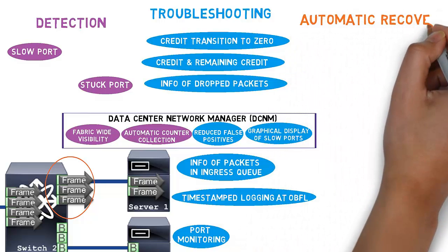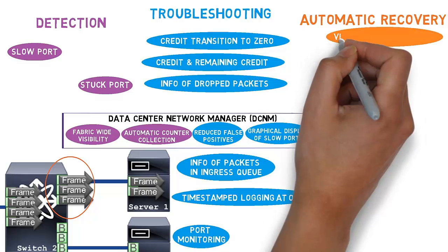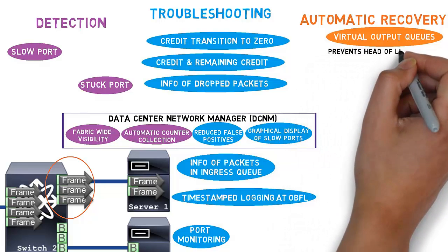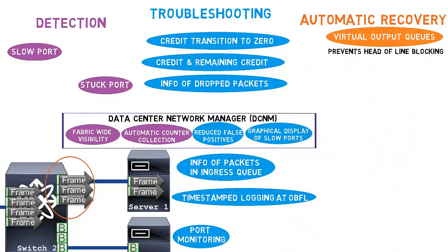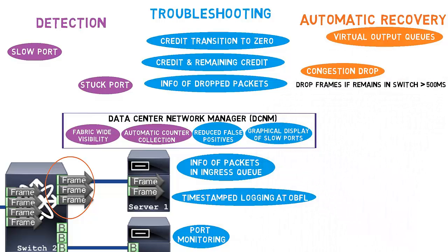Automatic recovery is the key differentiation of MDS switches and is done both in software and in hardware. Cisco MDS switches maintain separate egress queues with all ingress ports for all egress ports. These virtual output queues prevent head-of-line blocking. A frame sitting inside the switch for a longer duration is treated as congestion and can be dropped by setting an appropriate value as part of congestion drop timeout.